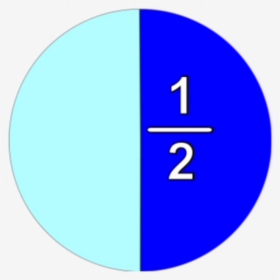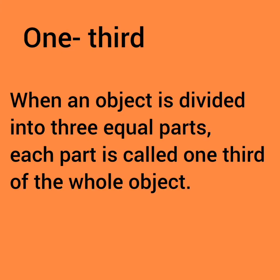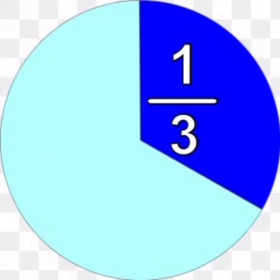The next one is one third. When an object is divided into three equal parts, each part is called one third of the whole object. All the three parts will be divided equally, and we write it as one by three. If we put all these pieces together, we will get a whole object.